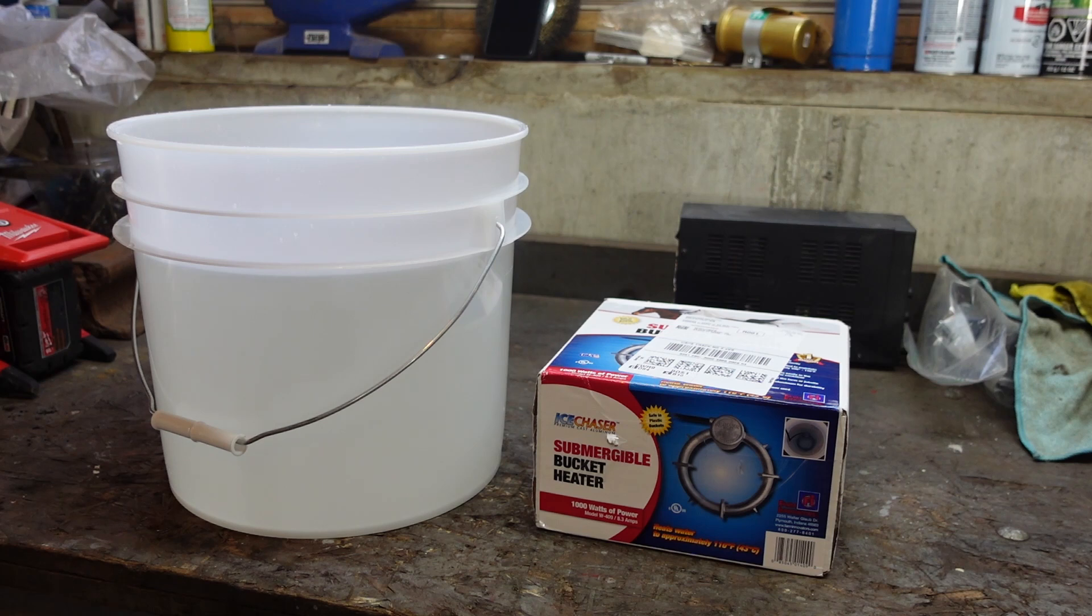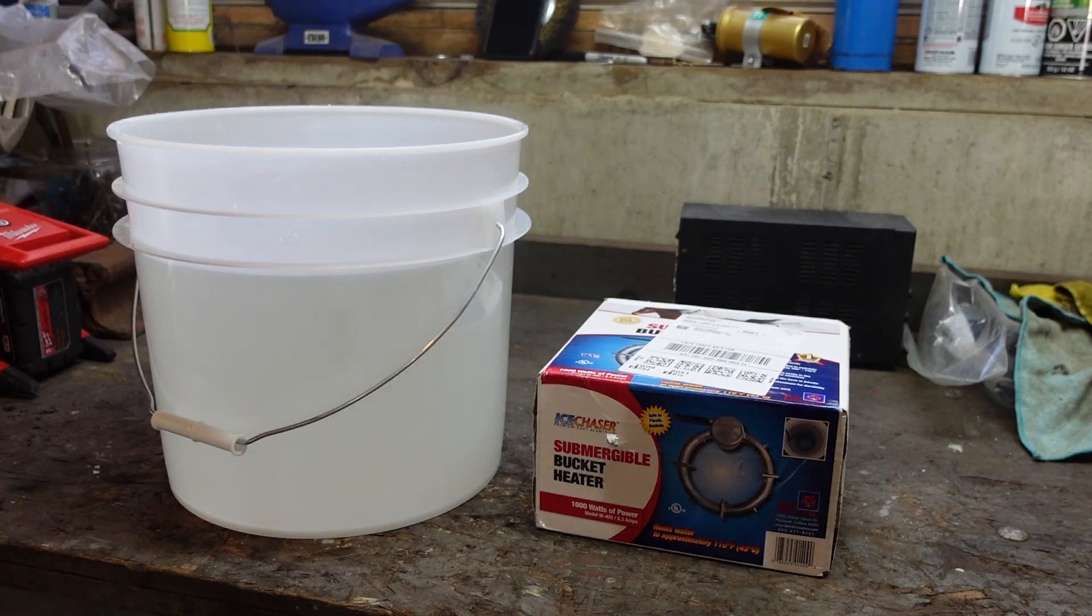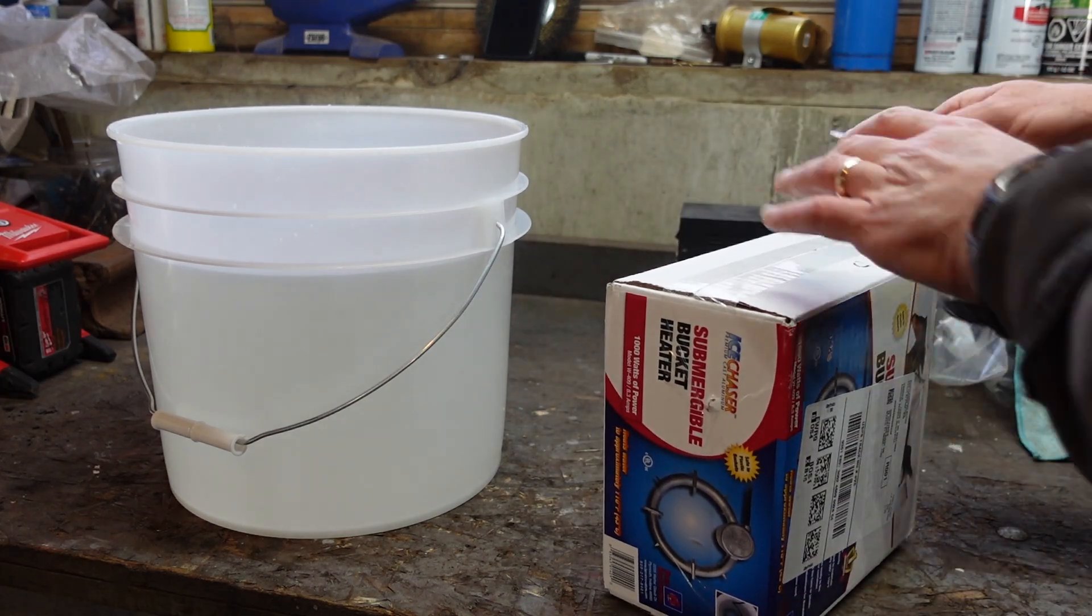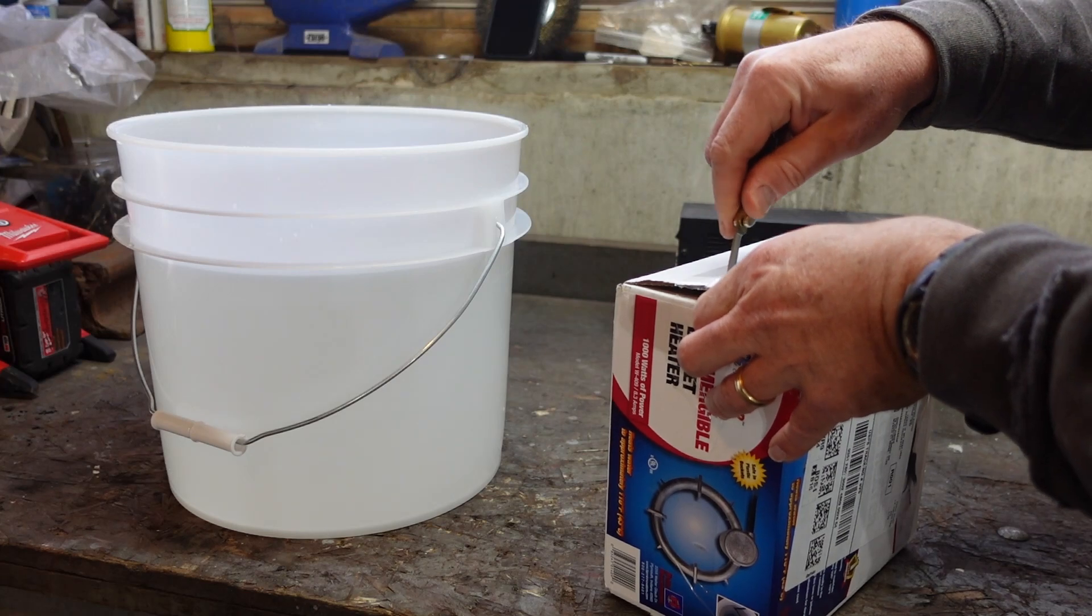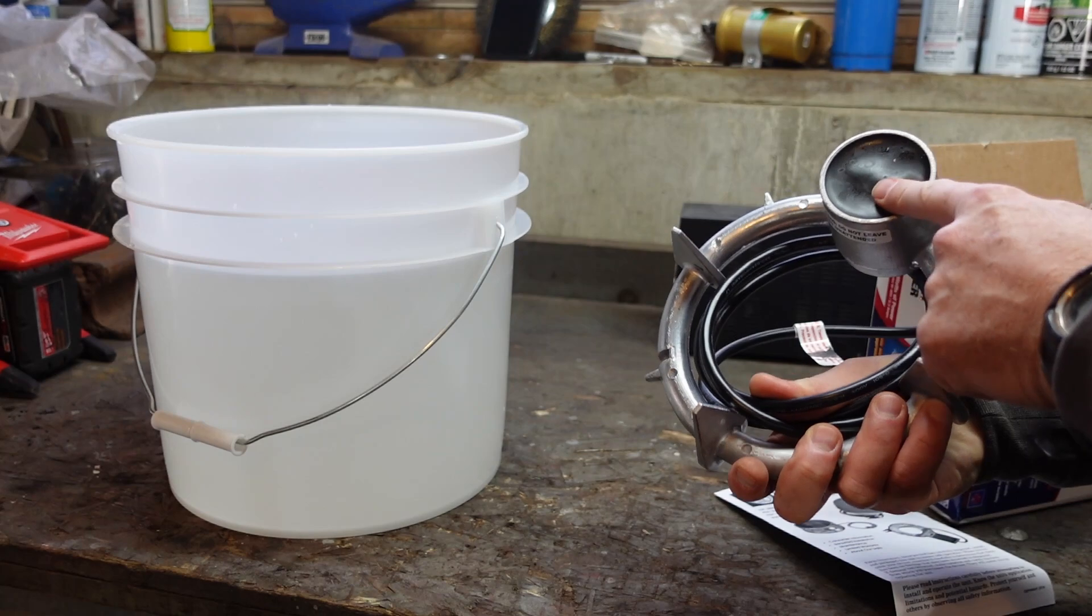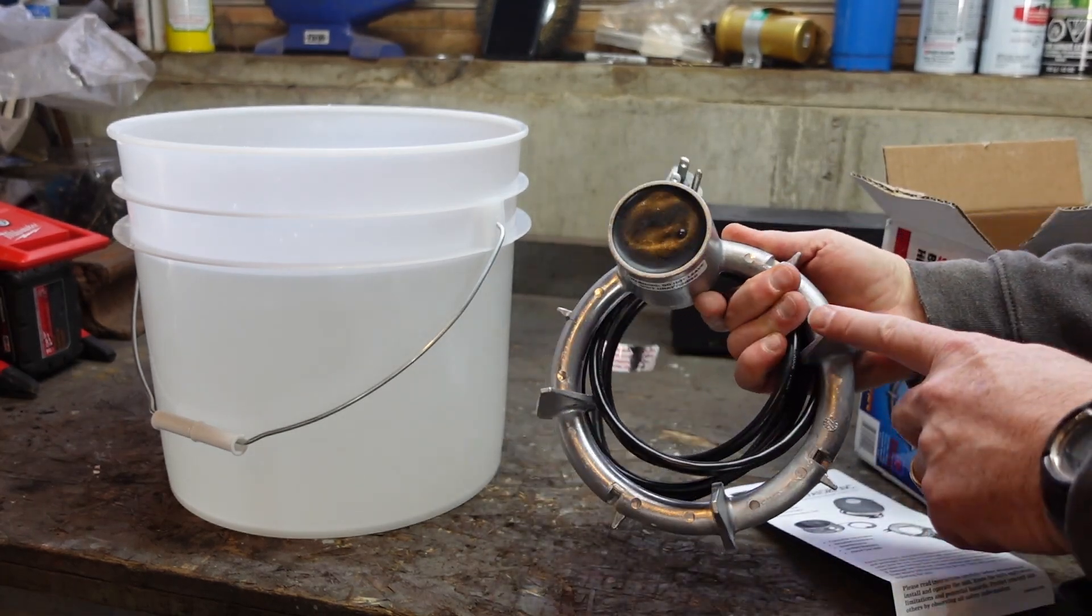So this thing is totally submersible. We're going to put it in the bottom of the bucket here and plug it in. It maintains about 110 degrees by itself. And right now this water is probably about 45, 50 degrees or so. It's only about 45 in the barn now. I wouldn't obviously be able to do this without heating this water. So we're going to go ahead and open this guy up, put it in there, plug it in. And I got a little infrared thermometer here.